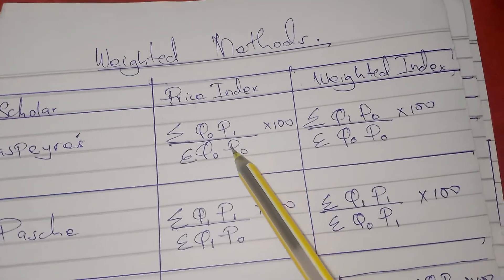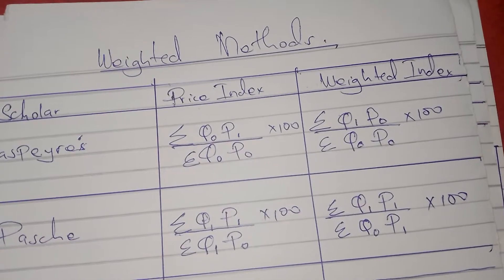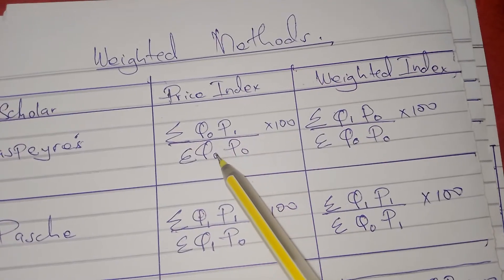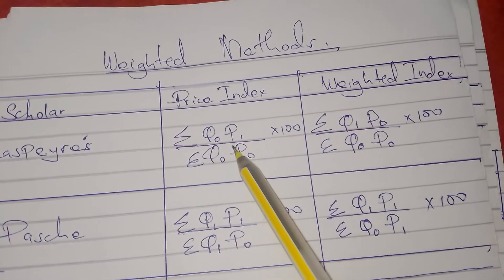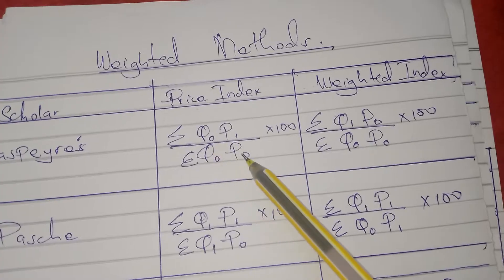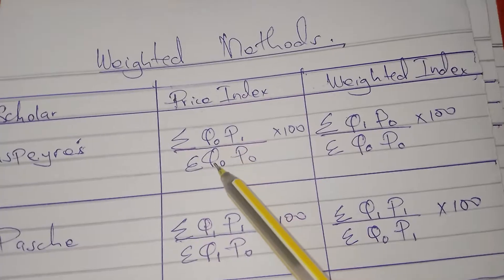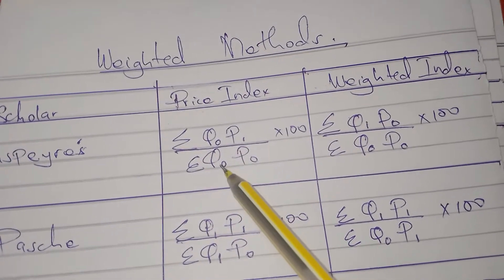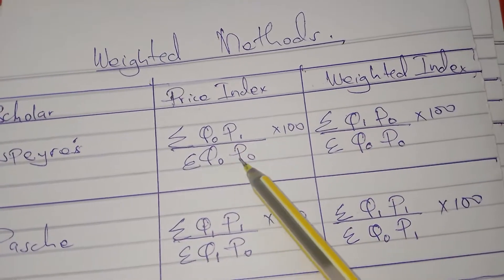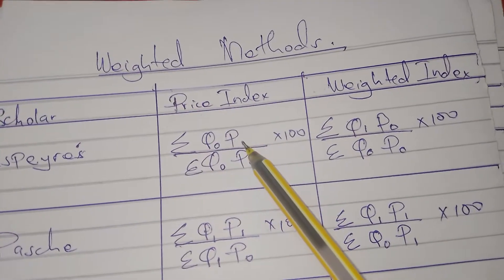The main thing to note is that Spayless concentrates more on the base year than the current year. In his price index, we are using more of the base year. When calculating the price index, quantity is constant — only prices are changing. We have p-naught and p1, but quantity is constant: q-naught and q-naught. So Spayless uses the base year as the constant quantity, while prices change.